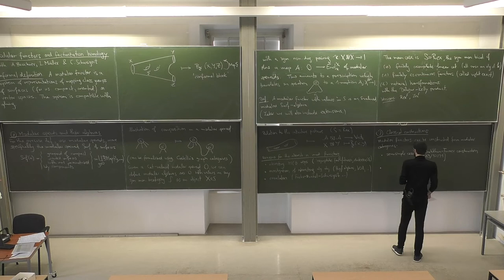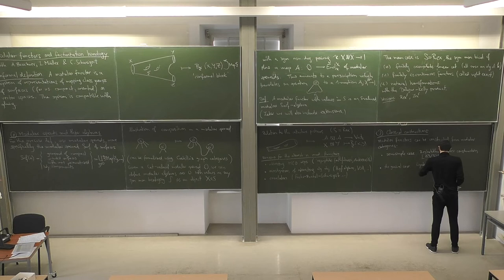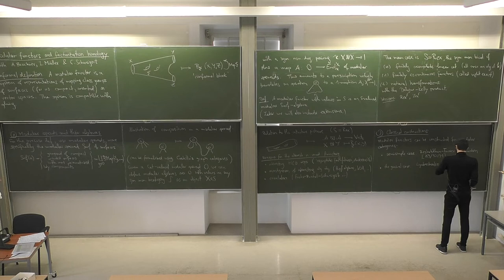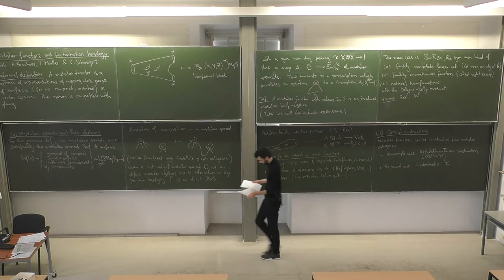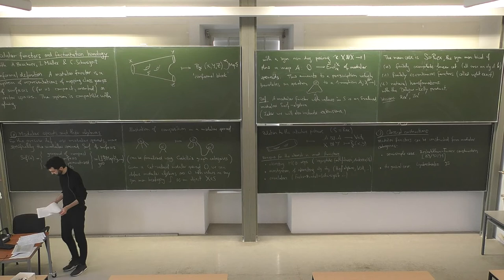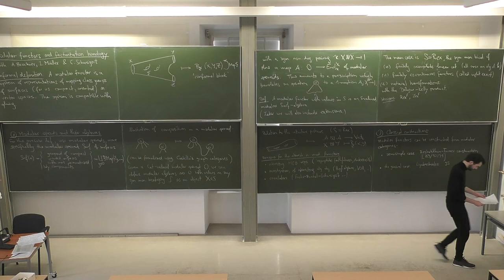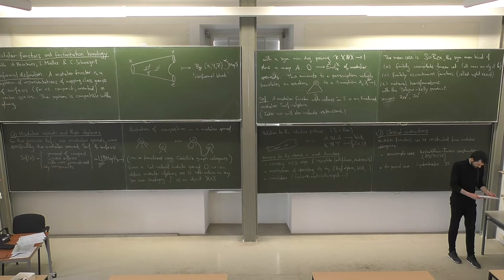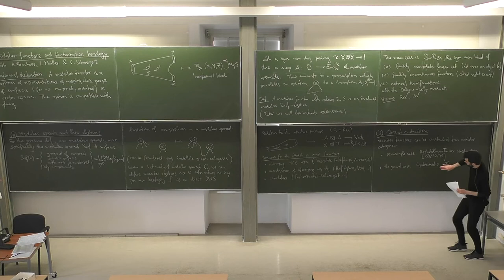In the general non-semi-simple case, there is the Lyubashenko construction from the mid-1990s, partly in collaboration with Majid. Let me give an idea of what this construction looks like in the case where our modular category is A-mod and A is a ribbon factorizable Hopf algebra.